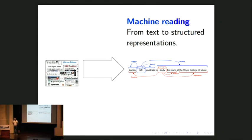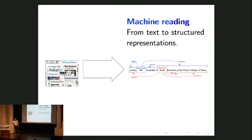I'm going to focus today on a subset of natural language processing I'd call machine reading, where we focus on taking text and producing structured output. I won't talk about text generation or speech recognition. When we think about machine reading, the structured representation I'm showing here is a representation of the syntactic structure of a sentence — the roles that different entities are playing in some kind of event.